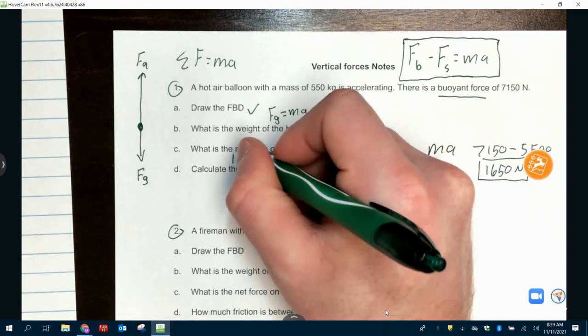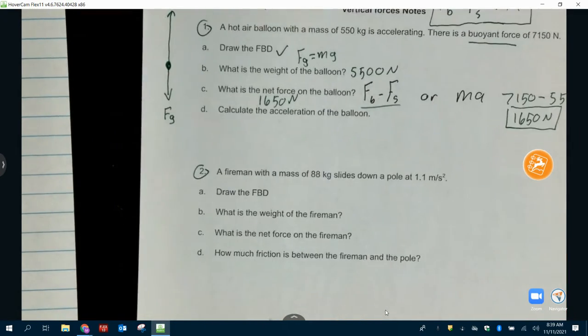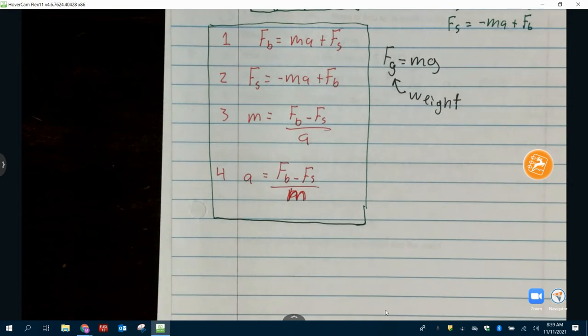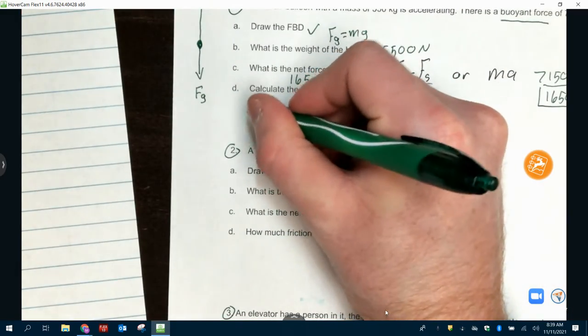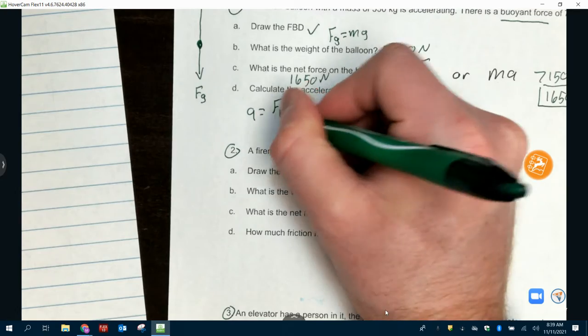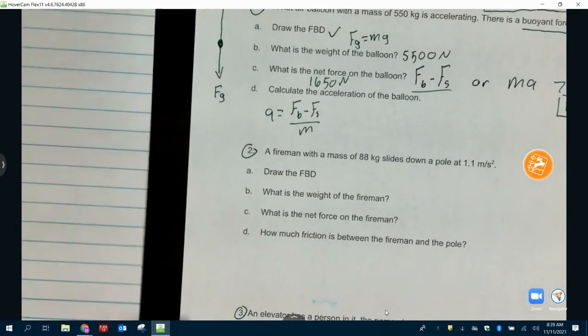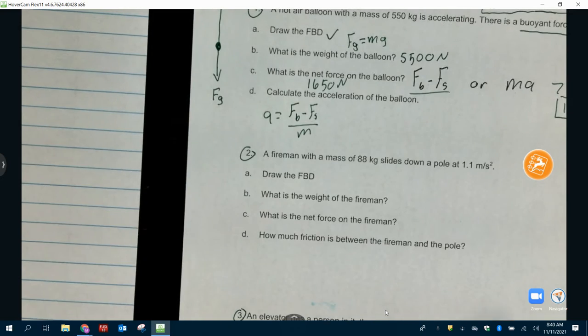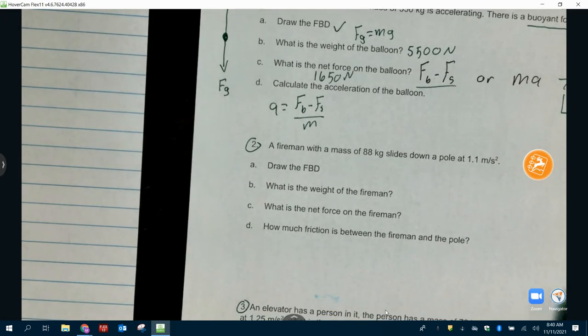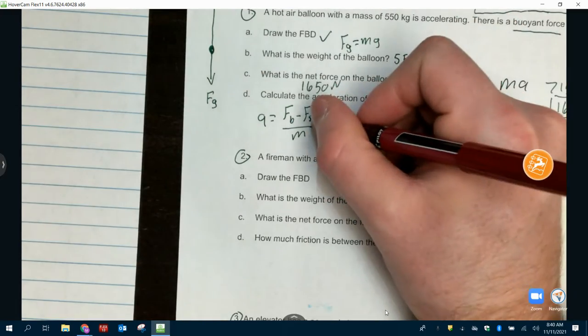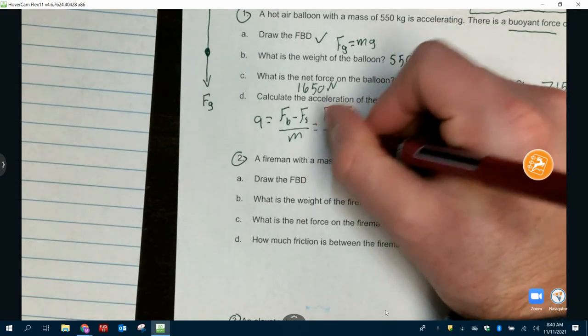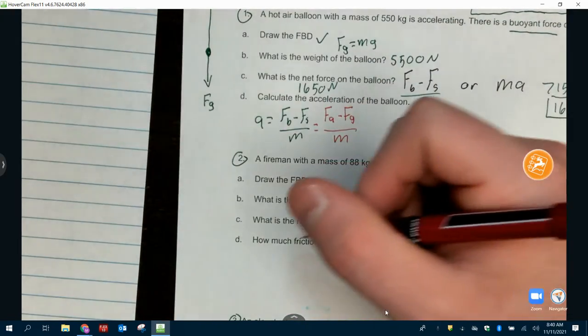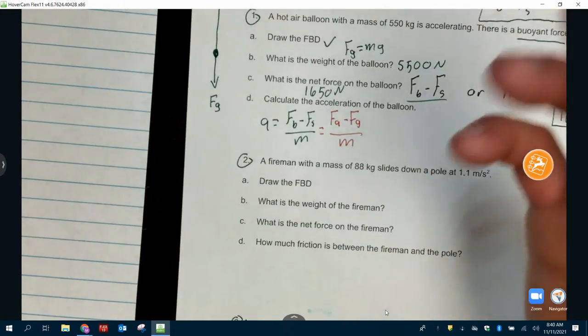And then to get acceleration of the balloon. Well, to get acceleration, I'm going to choose the equation that's solved for acceleration, which for us is number four. So, A equals F_B minus F_S over M. And now we're just plugging in what's what. We know that our big force, you can plug in the numbers, or we can do a middle step and say, well, that's F_A is my big force minus F_G is my small force over M. Or you can just plug in big number minus small number over M. Both of those are going to get you the same thing.